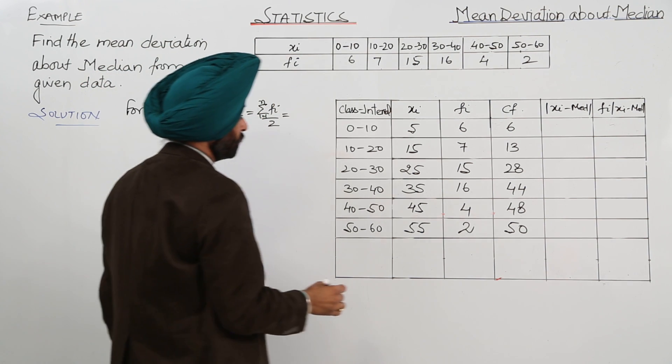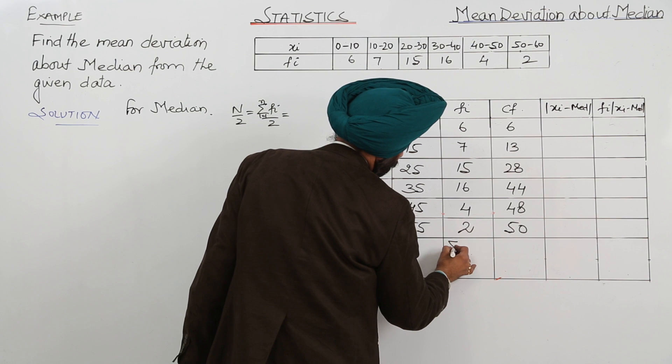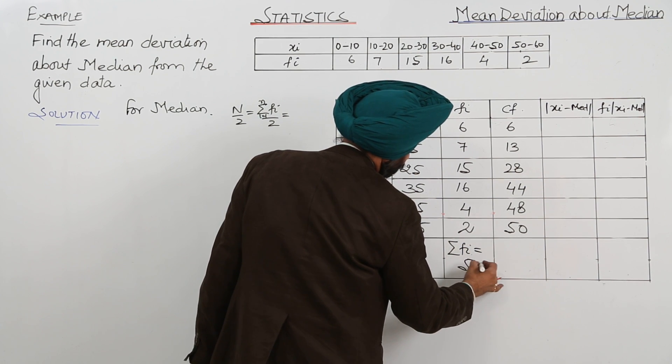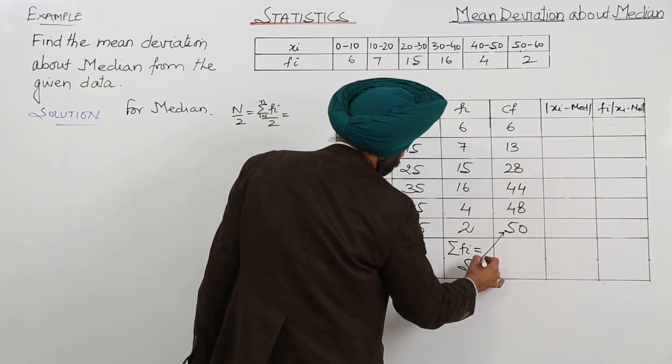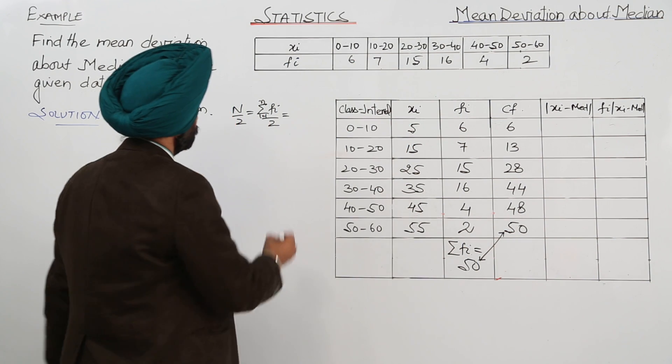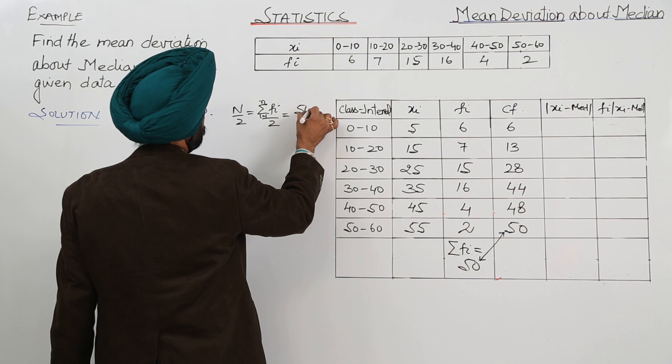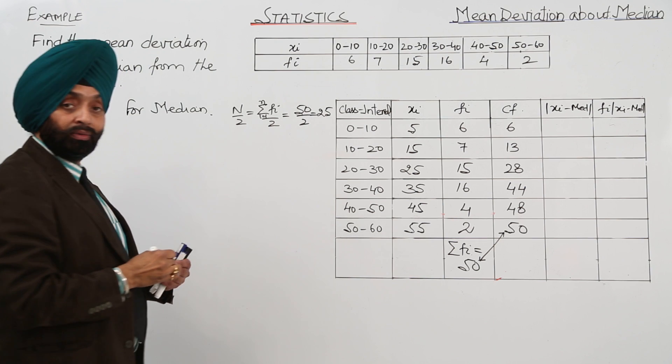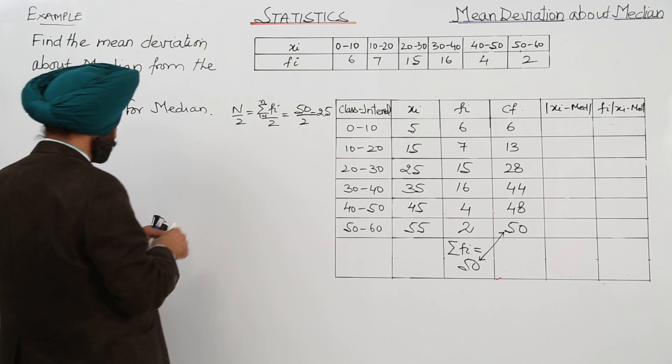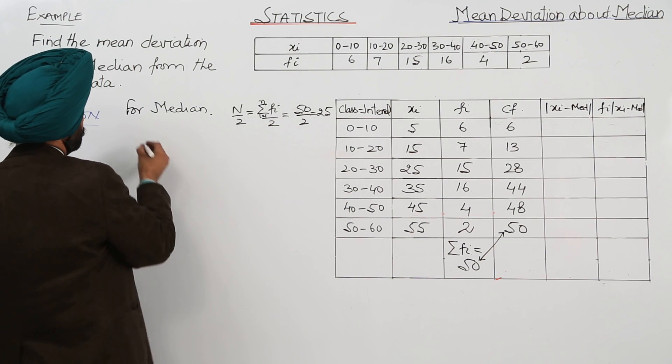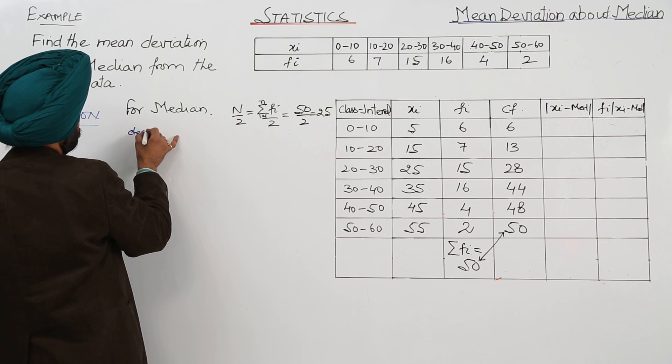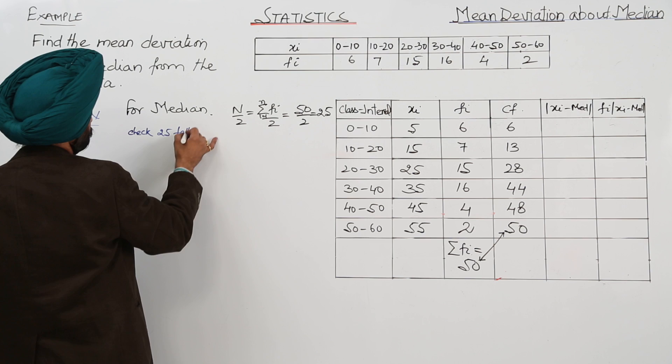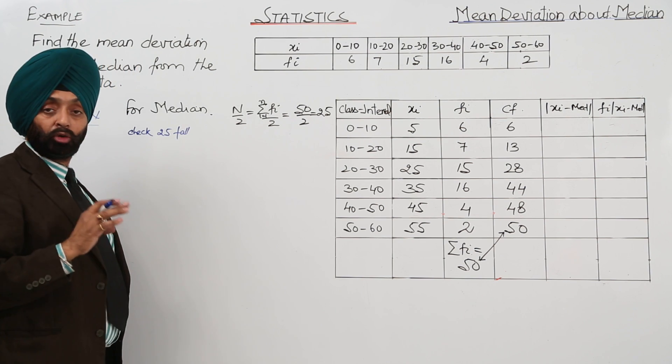Now summation of Fi is equal to 50. So 50 upon 2 is 25. Now 25 falls in which class interval? Now I am just writing here. Check. 25 falls. Now 25 in the cumulative frequency.